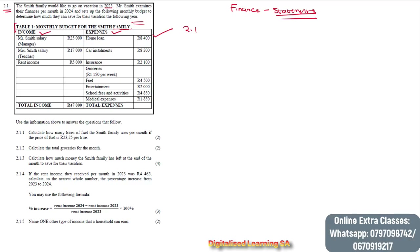We'll start with question 2.1.1. The question says: calculate how many liters of fuel the Smith family uses per month, if the price of fuel is R23.25 per liter.